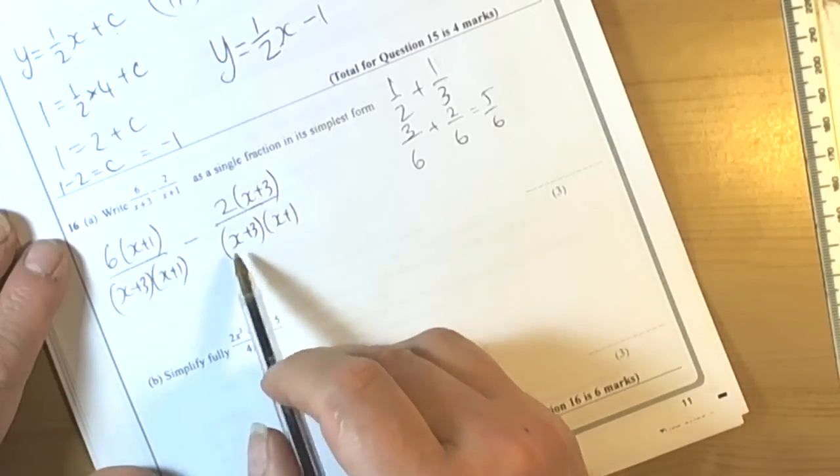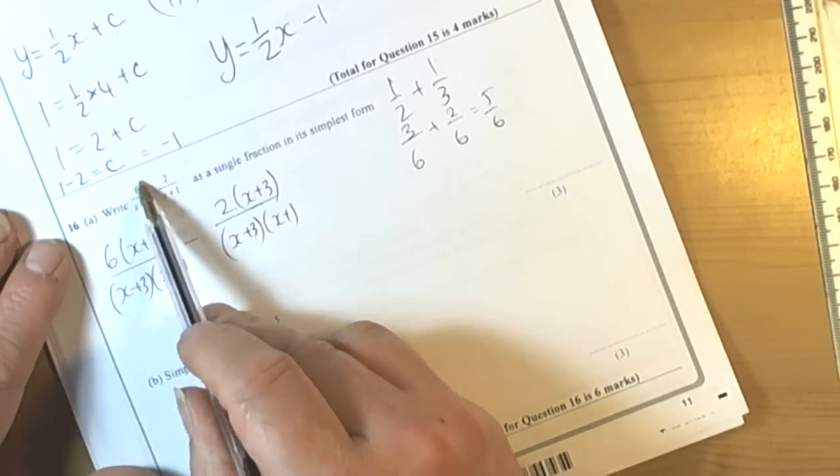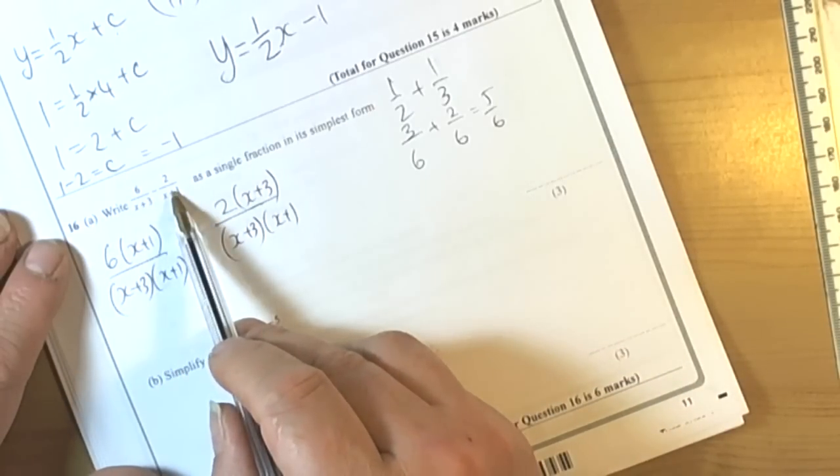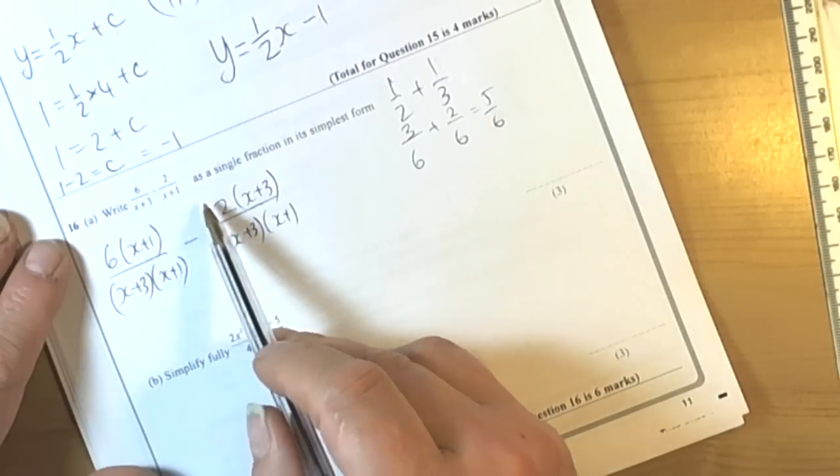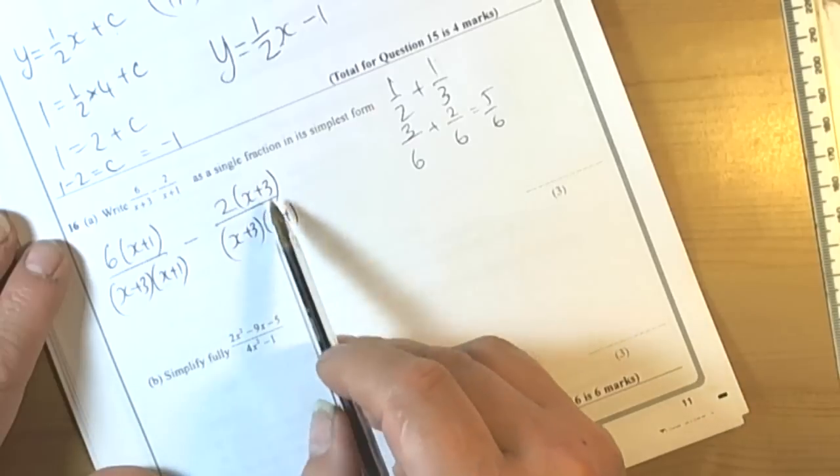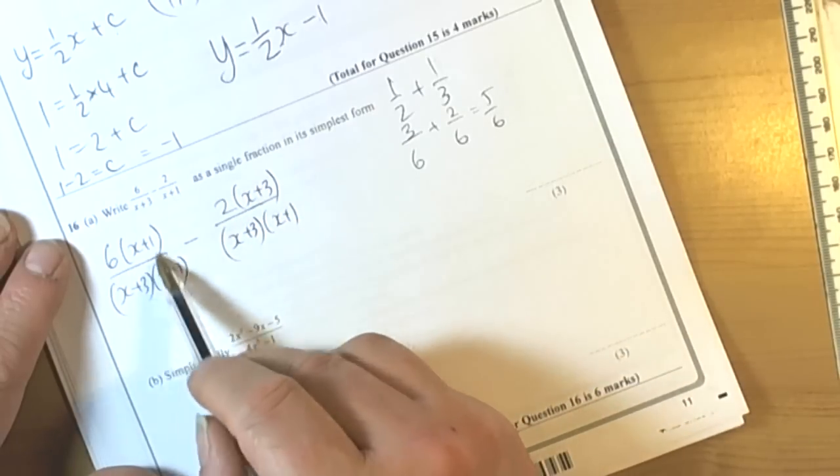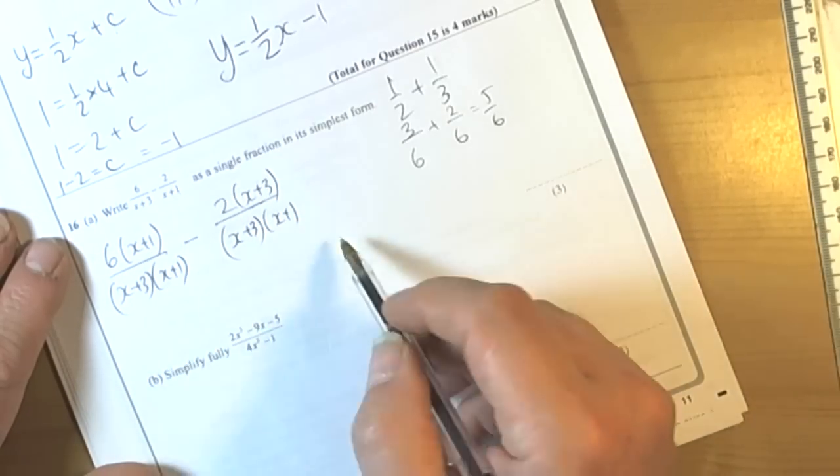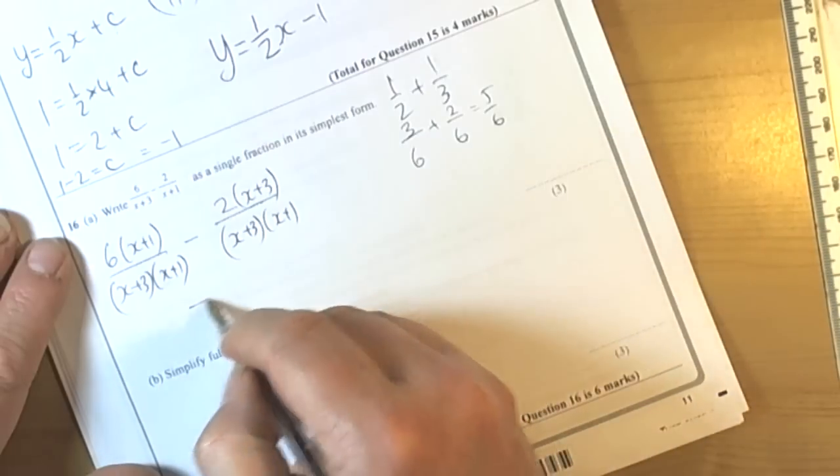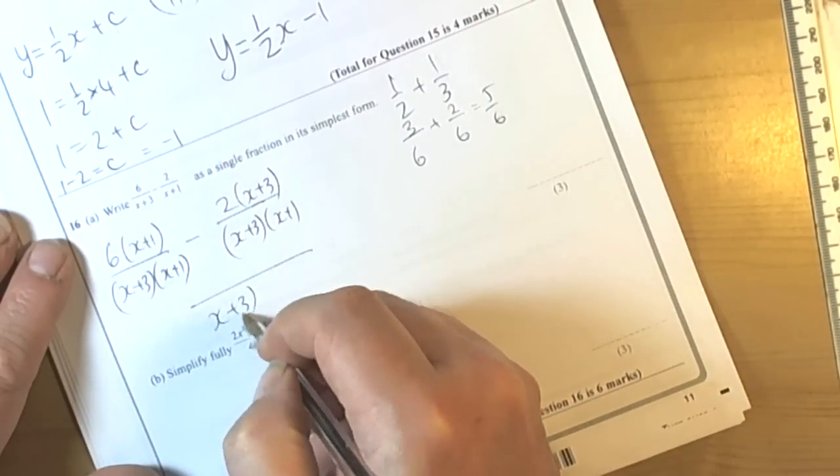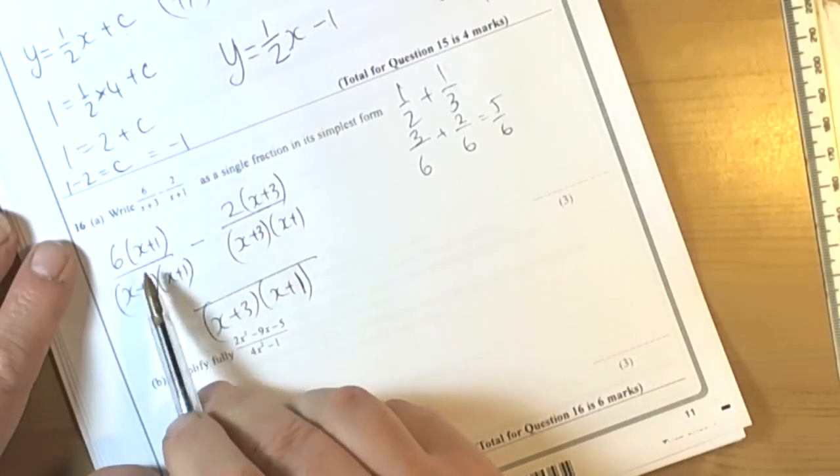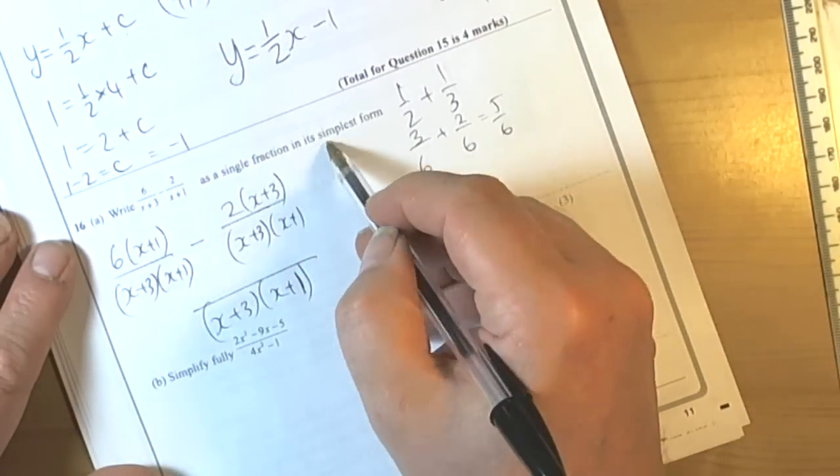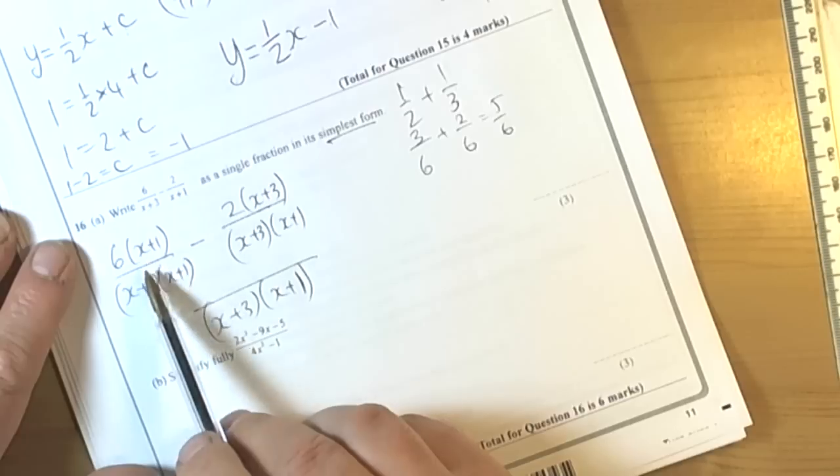So the same thing happens here. We've literally multiplied the first fraction by the opposite denominator top and bottom, and the same with this one. We've multiplied by the opposite denominator top and bottom, because that doesn't change the value of the fraction, just changes the way it looks. So we've now got our common denominator, which is x plus 3 times x plus 1. But then we've just got to multiply out these brackets, and because it says simplest, we've just got to make sure like terms are brought together.